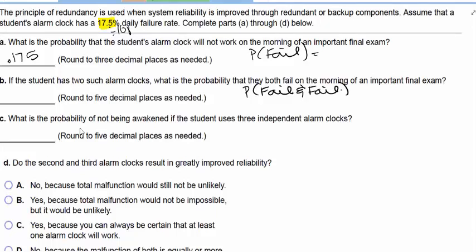Alarm clock one fails and alarm clock two fails. So the probability that both alarm clocks fail is the probability that the first one fails and the second one fails, or 0.175 squared. Notice they're independent of each other. This equals 0.03063, rounded to five decimal places.